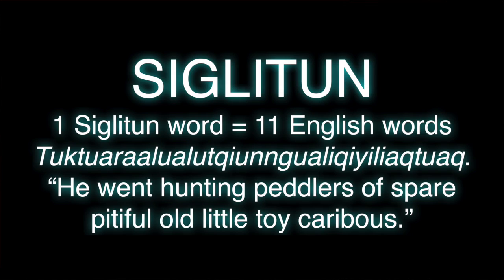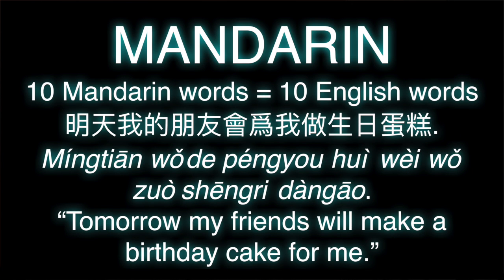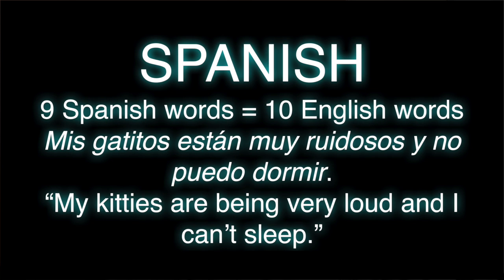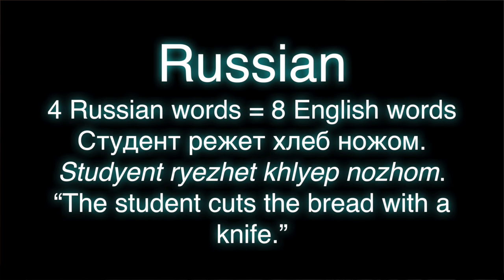The degree of synthesis for a language runs the gamut from highly synthetic or agglutinating to not very synthetic at all, or isolational. Languages that are in between those extremes are often called either fusional or inflectional. But there really aren't three types — languages fall everywhere along the spectrum.